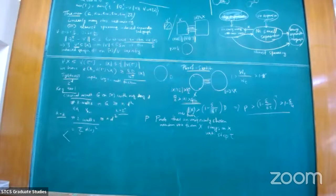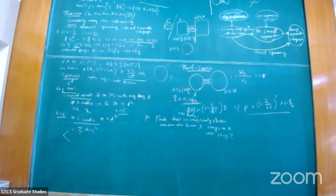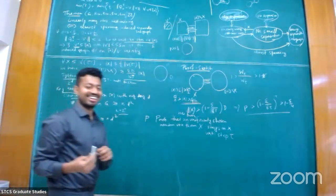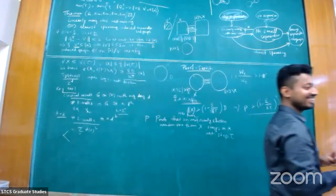Maybe you can support some sort of entropy argument for random walks of average length k to get the walk counting bound for general k as well.